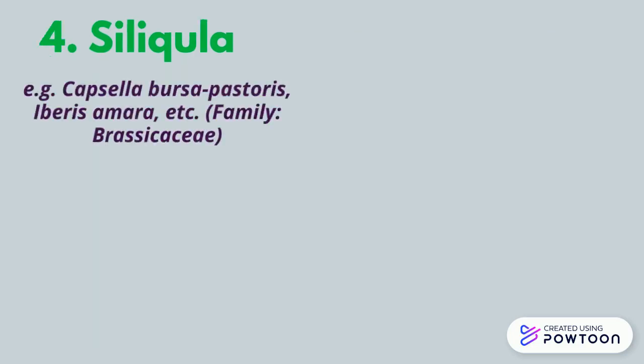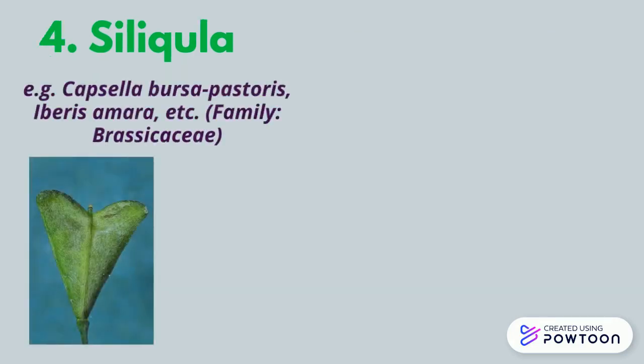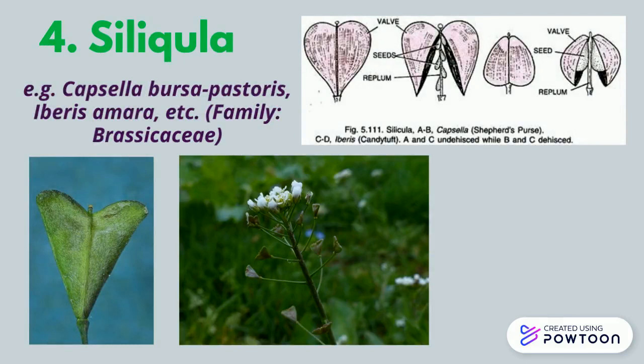Coming to silicula, it resembles siliqua but it is shortened and wide, and it contains few seeds. For example, Capsella bursa-pastoris, which is known as shepherd's purse, and Iberis amara, known as candy tuft.